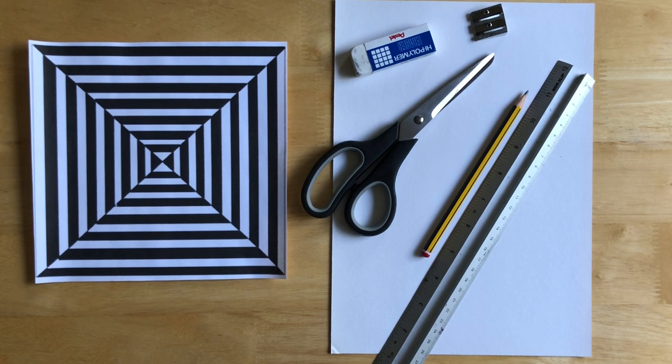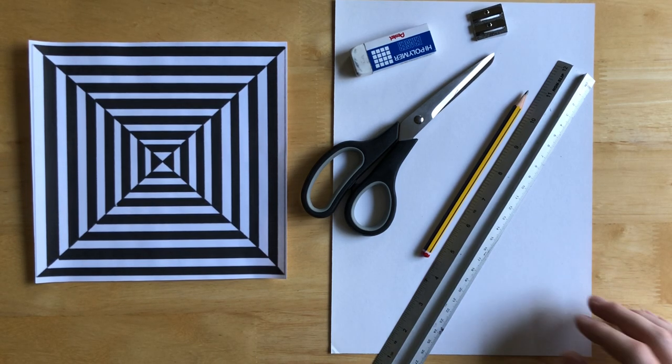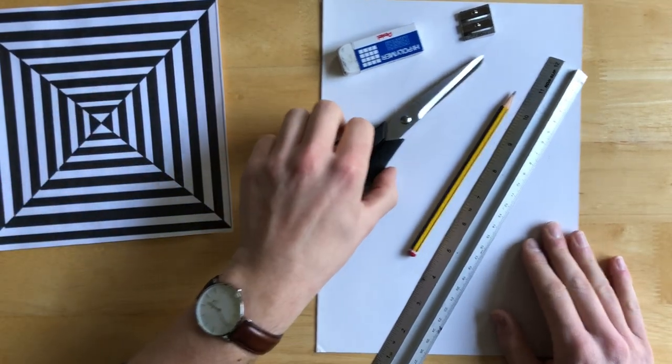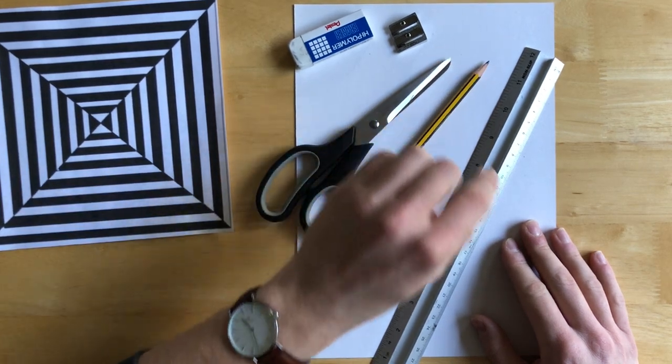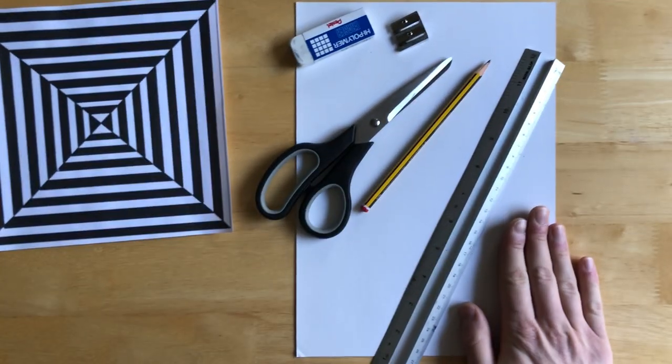So for today's task, the materials you're going to need are a pair of scissors, a rubber, you may need a sharpener, a drawing pencil and a ruler with a piece of paper.